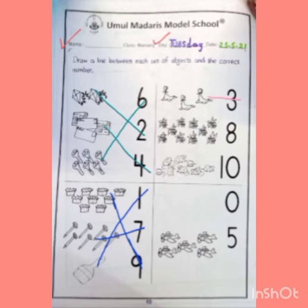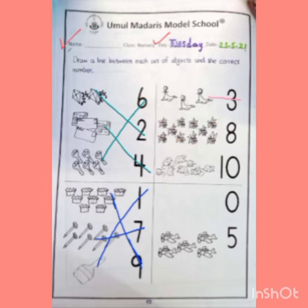Next object are ants. Count with me: one, two, three, four, five, six, seven, eight, nine, ten — ten ants. तो हम ten ants को ten number से match करेंगे।